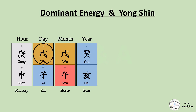I think the first difficulty you guys are encountering is finding dominant energy and finding Yongshin. This one takes a long time because not every chart has an obvious partiality.